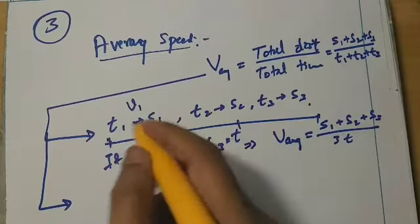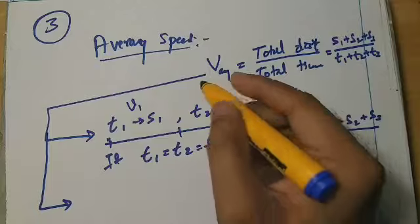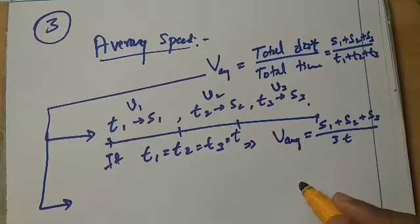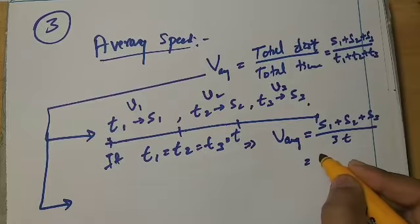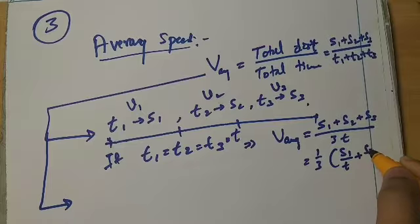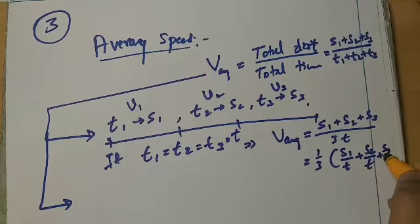Distance covered, velocity. Again, V2 velocity. So 1 by 3 times, S1 by T plus S2 by T plus S3 by T. S1 by T is V1, S2 by T is V2, S3 by T is V3.